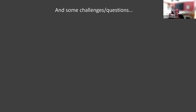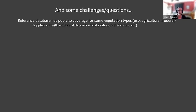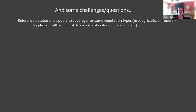Some of the challenges and questions I've had developing this project — and actually why I started coming to some of these office hours — is that I discovered the reference database has relatively poor coverage for certain vegetation types. For example, some of the agricultural types that I think were drawn from the Cropland Data Layer didn't really have any field plots. I've been addressing this by supplementing with additional datasets, and I hope I can encourage the folks who provided me that data to contribute it back into the LANDFIRE program, because I've seen quite a lot of value in this reference database.